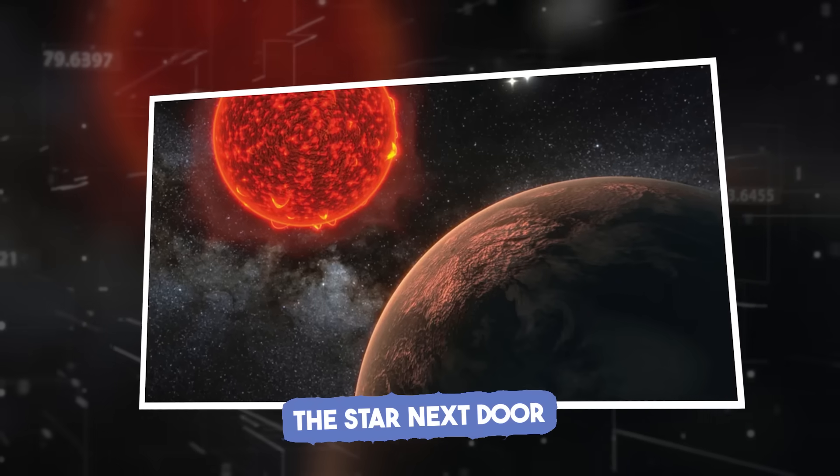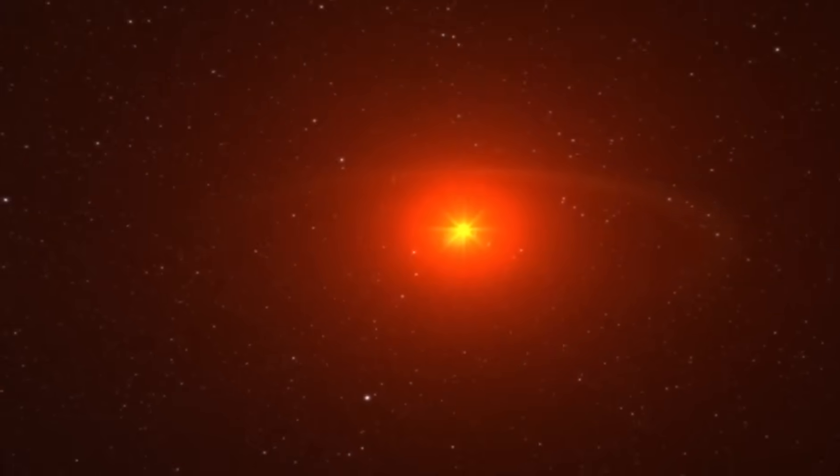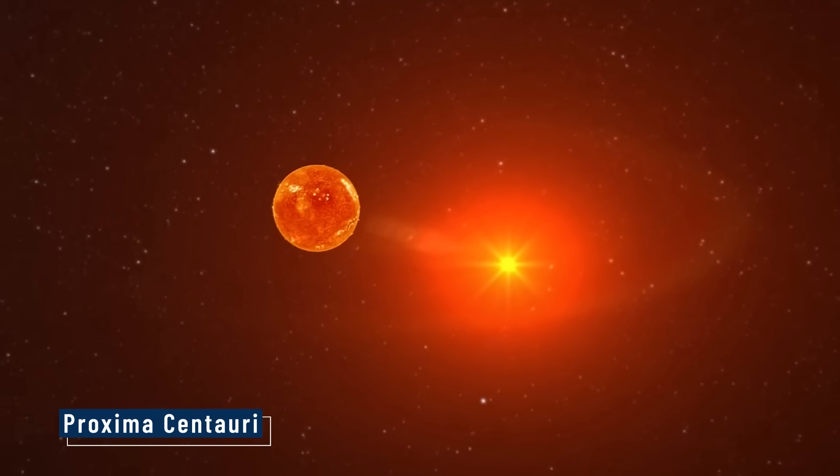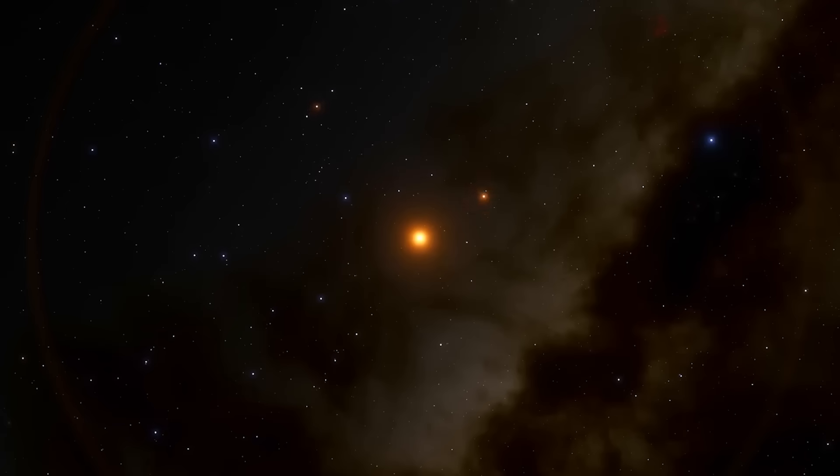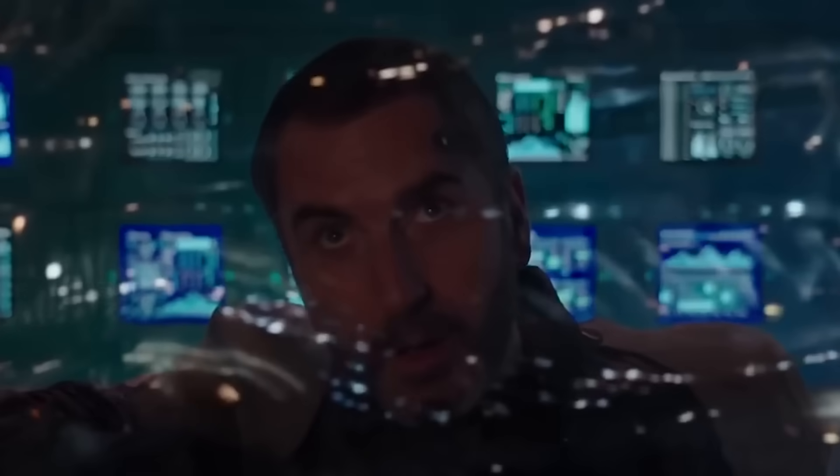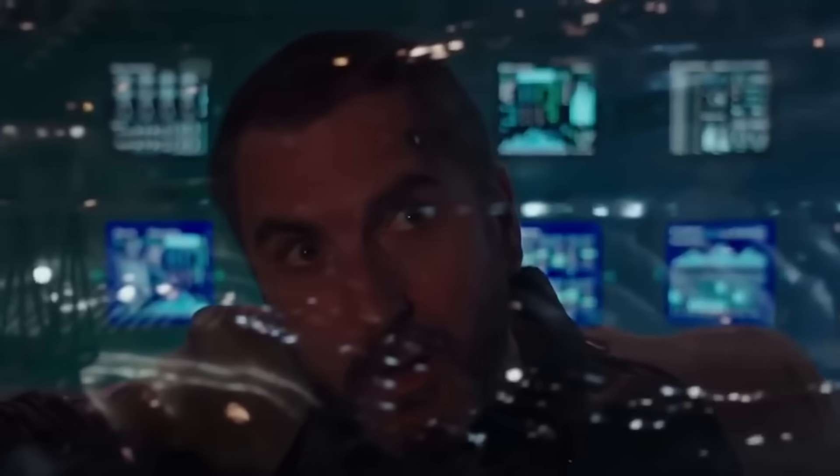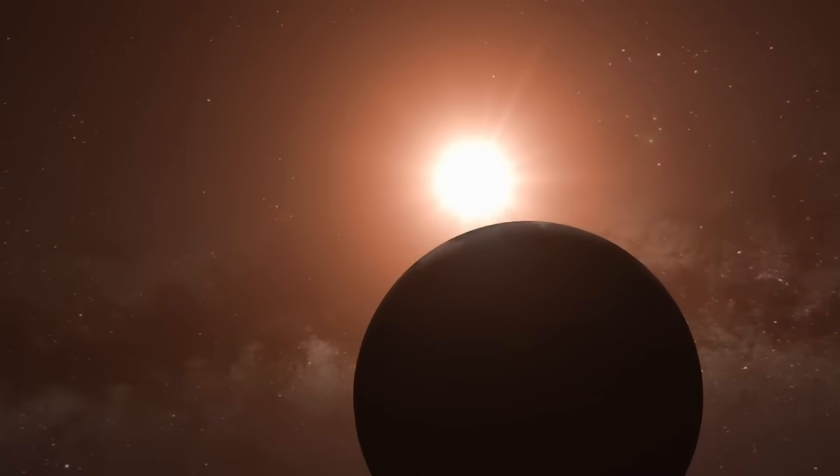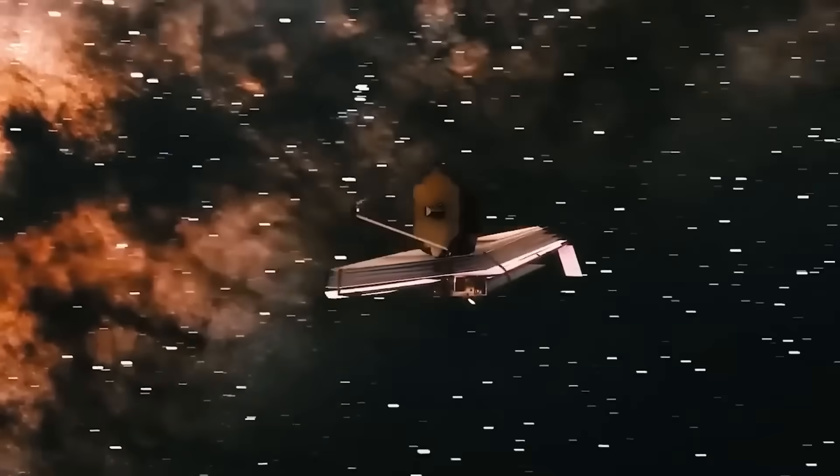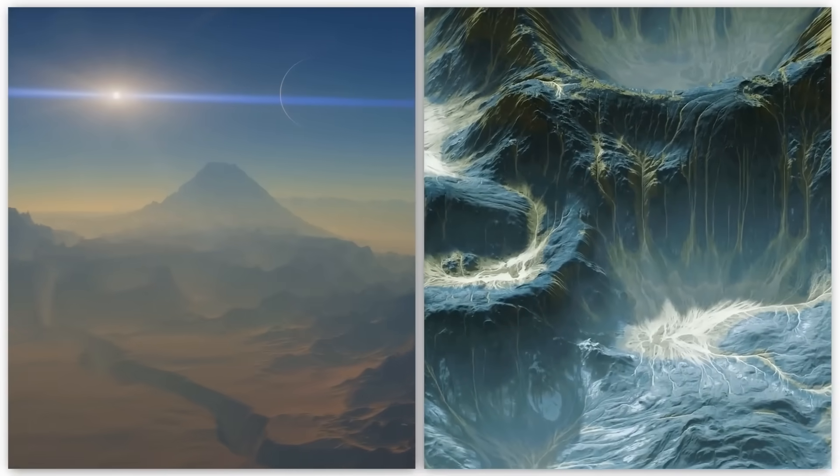Let's talk about the star that Proxima b orbits - Proxima Centauri. It's not just close, it's the closest star to our sun, part of a three-star system called Alpha Centauri. While two of those stars are bright enough to see from Earth with the naked eye, Proxima Centauri is smaller, cooler, and dimmer. You can't see it without a telescope, but it's the one with the most interesting planet.